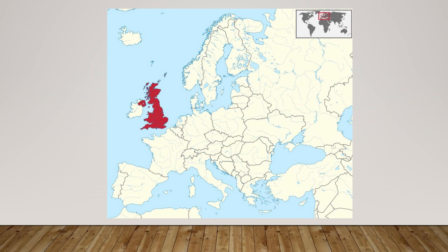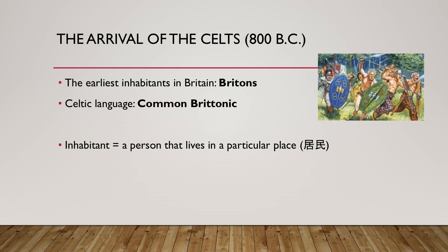English is a language that is spoken by the English people, of course. However, English is actually not the first language that was spoken in the British Isles. Although England is often considered as a part of Europe, the British Isles is actually isolated from the European continent. Around the 8th century, a group of Celtic people moved to England, bringing along their language. As the earliest inhabitants in Britain, they are known as the Britons. They spoke Common Brittonic, a Celtic language that is barely related to modern English.